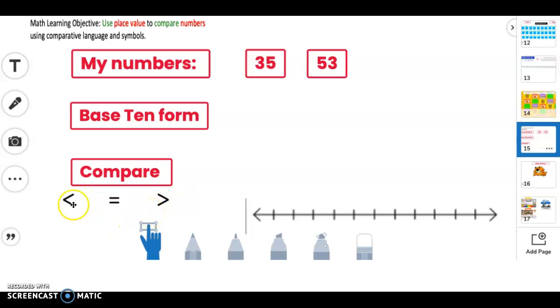What does this mean? Whatever is on this side of the arrow is less than what's on this side of the arrow, which is why it's bigger on this side. Whatever is on this side is bigger than what's on this side.